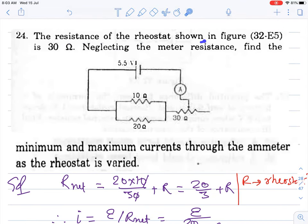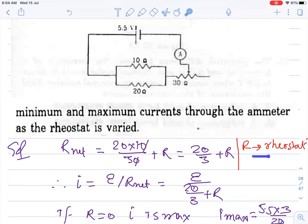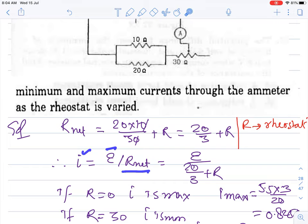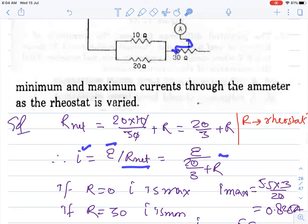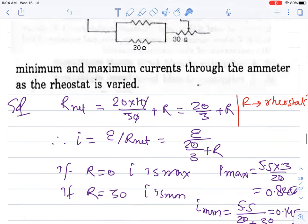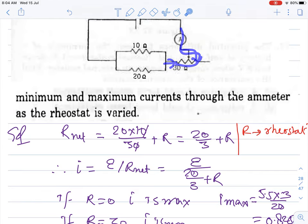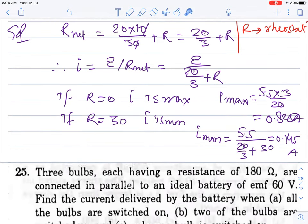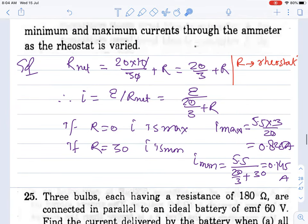Question 24: The resistance of the rheostat shown in figure is 30 ohms. Neglecting the meter resistance, find the minimum and maximum current through the ammeter as the rheostat is varied. Let rheostat resistance be R. See how it changes - we calculate parallel first with these two, R in series. Then Ohm's law: current equation, EMF upon net resistance. If we contact here, resistance is fully bypassed, becomes zero minimum. So maximum current comes in that case. Put zero here, solved, we get 0.825. Maximum R can be 30, full extreme point - all current goes this way. Put 30 here, solve, 0.145 - current decreased. That's how variable resistance works to control the circuit.